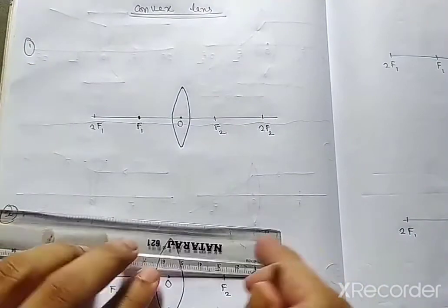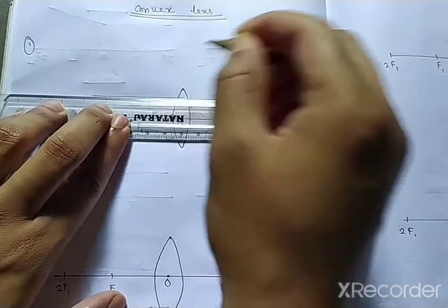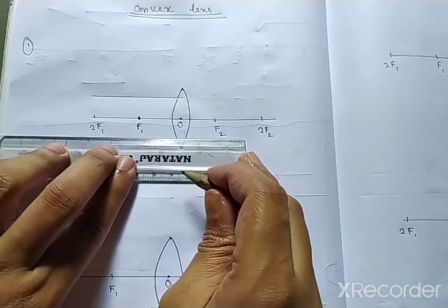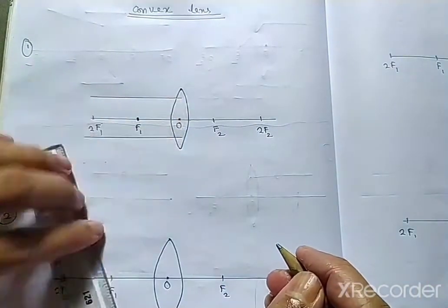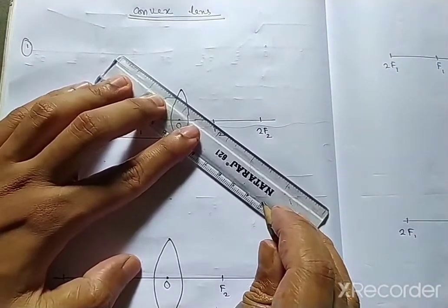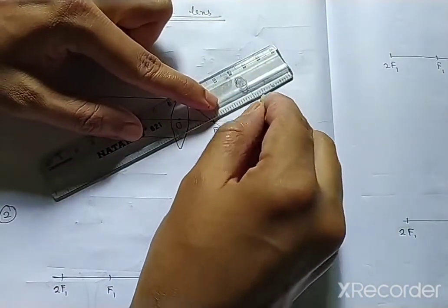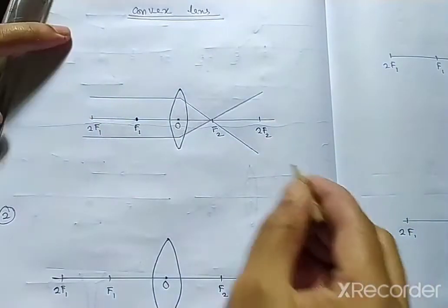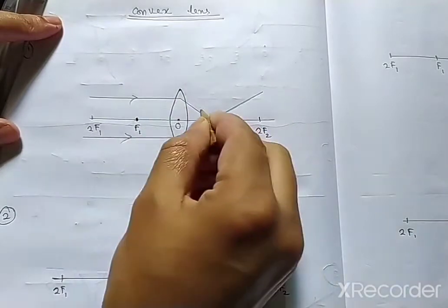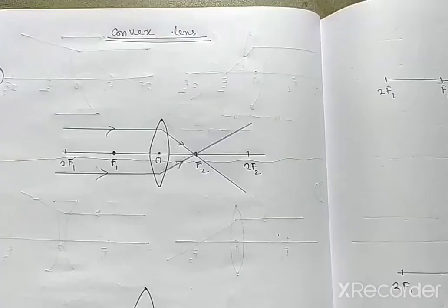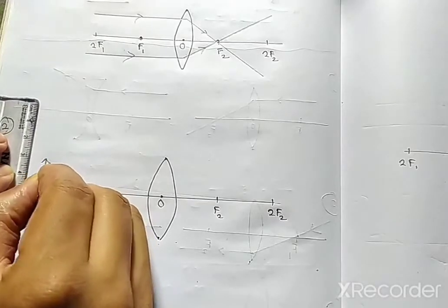In the first diagram, the position of the object is at infinity. The rays are coming parallel and meet at the convex lens. Two rays come and meet at F2, that is the focus. The position of the image is at the focus. The relative size of the image is highly diminished and point-sized, and the nature of the image is real and inverted.